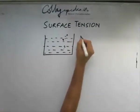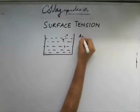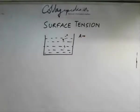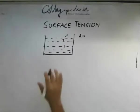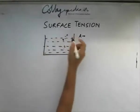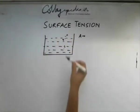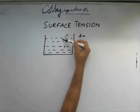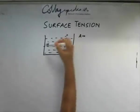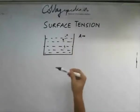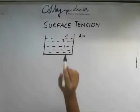At A, the potential energy of the molecules should be zero. Considering I am referring to some point which is in the vicinity of A, the potential energy of any molecule of this liquid which is just above the surface is zero.